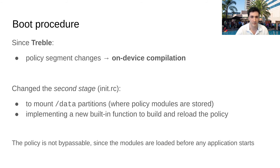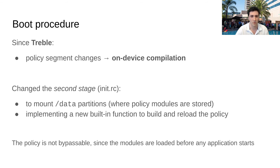We also had to modify the startup procedure to make sure that policy modules are available after boot. Since Project Treble, each time a policy segment changes, an on-device compilation is required. Thus, we needed to integrate the policy modules accordingly. For that, the second stage in init rc was modified to mount the data partition only — data is where we decided to store the policy modules — and immediately after that, a call to a new built-in function that builds and reloads the policies is performed. By doing this, we make sure the policy module is not bypassable, since modules are loaded before any application starts.